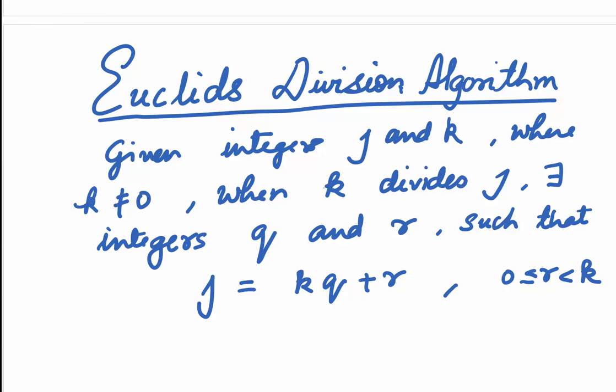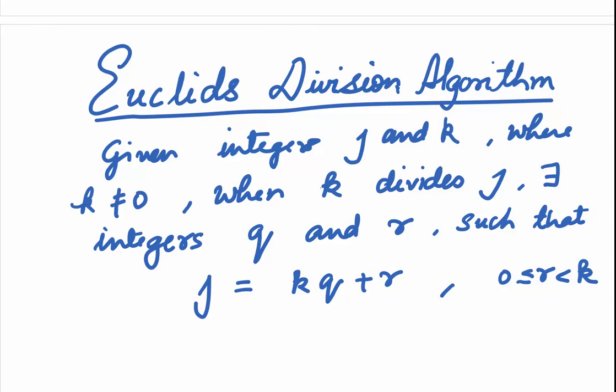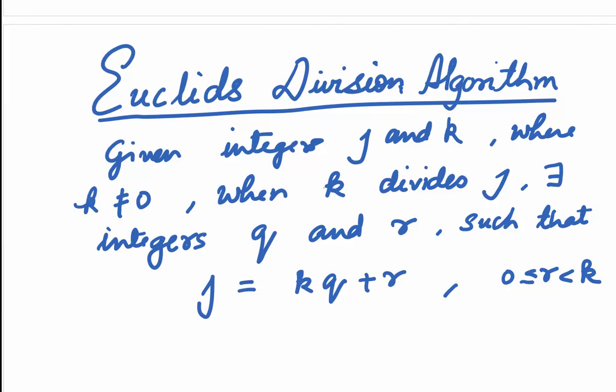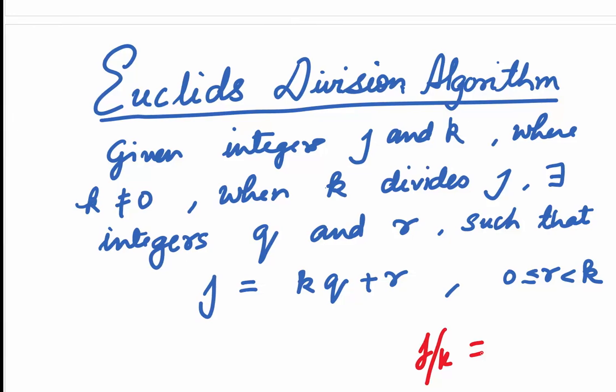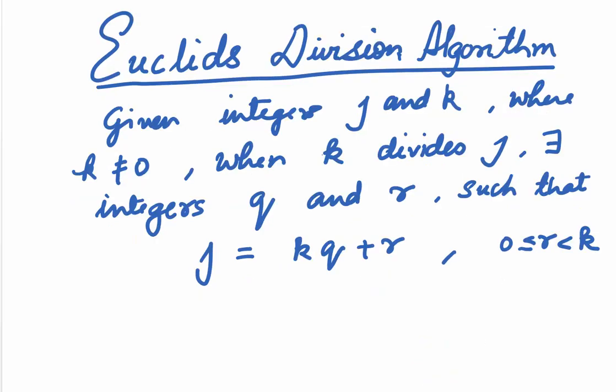If you recall, in Euclid's division algorithm, we say if j and k are two integers such that k is non-zero, then when k divides j, there will exist integers q and r such that j is equal to kq plus r. That is, j divided by k can be written as j equals kq plus r, where q will be the quotient and r will be the remainder. r is always greater than or equal to 0 — it can be 0, but it's always positive and it will be less than k. In this type of division, the quotient q and r are always unique.